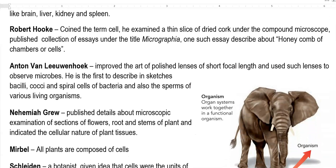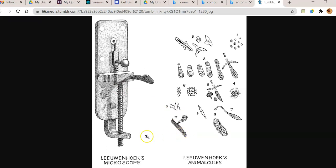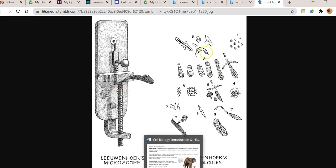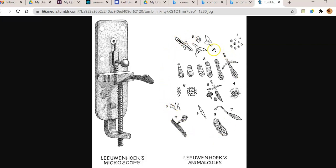The next one is Anton van Leeuwenhoek. He improved microscopy with the help of polished lenses having a short focal length. Using such lenses he made hand-drawn sketches about the appearance of organisms — mainly the appearance of bacilli, cocci, and spiral cells. Here you can see the type of microscope used by Anton van Leeuwenhoek, as well as his sketches showing spiral-shaped cells and paramecium-like cells.